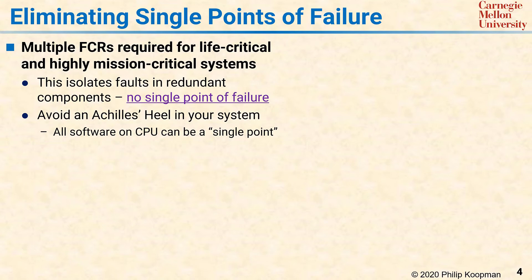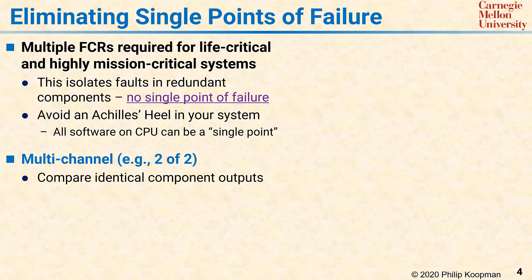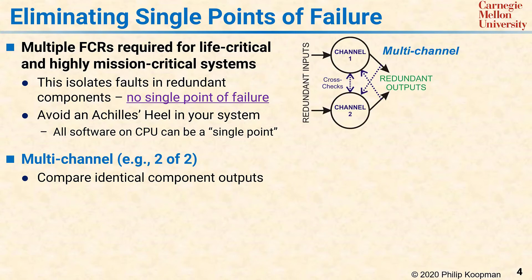There are three major patterns for avoiding single points of failure. The first is the multi-channel architecture pattern. This uses two or more computers to perform redundant computations and cross-check the results. A common way this pattern appears in embedded systems is the so-called two-of-two pattern, where two computers called channel 1 and channel 2 cross-check their computations and also check the outputs of the other channel.